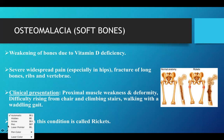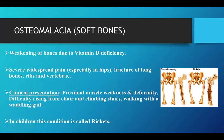As seen in this picture, this is a classic example of rickets in children. Affection of the long bones, usually the femur, is a very common area affected in rickets. That covers osteomalacia.